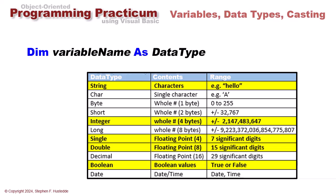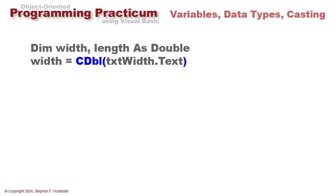Back to our rectangle calculator, we declared width and length as double type variables, and then we assigned to that width variable the text of our txt width control and converted that to a double. So that cdbl is a method that is part of our double class that allows us to convert string expression to a double value. That is called casting.